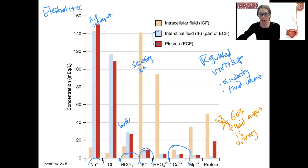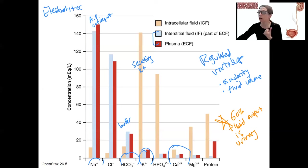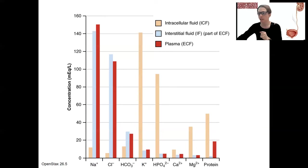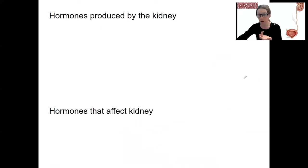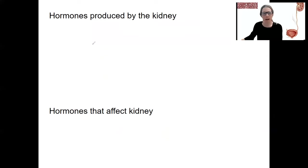Acid-base is another really important part of this chapter that we will touch on — regulating the pH of the blood — where the urinary and respiratory systems are huge for that. Now for an overview of the hormones we're going to be talking about: hormones produced by the kidney.